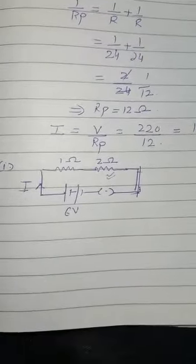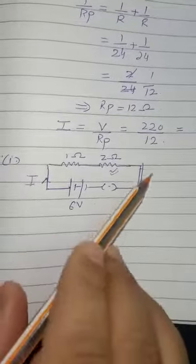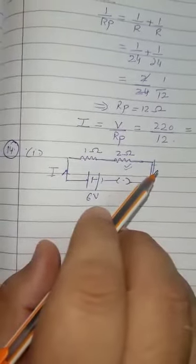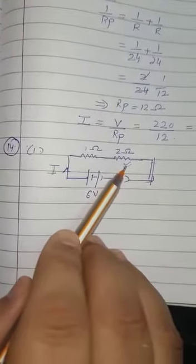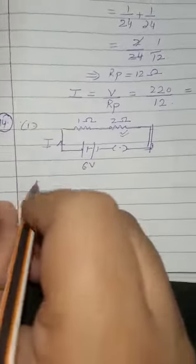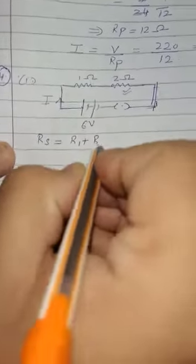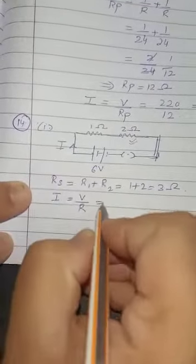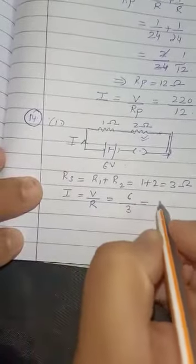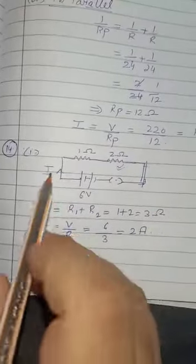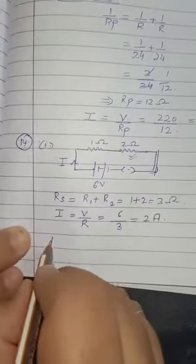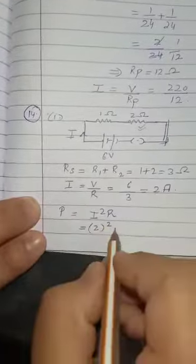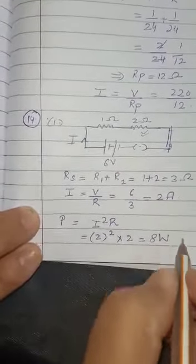We cannot use V squared by R here because the given voltage is the potential difference across the entire circuit, not across the 2 ohm resistor. To find the current, the equivalent resistance R1 plus R2 is 1 plus 2, which is 3 ohm. Current I is equal to V by R: V is 6, R is 3, so 2 ampere flows in the circuit. The same 2 ampere flows through the 2 ohm resistor. Power equals I squared times R2: 2 squared times 2 equals 8 watt.